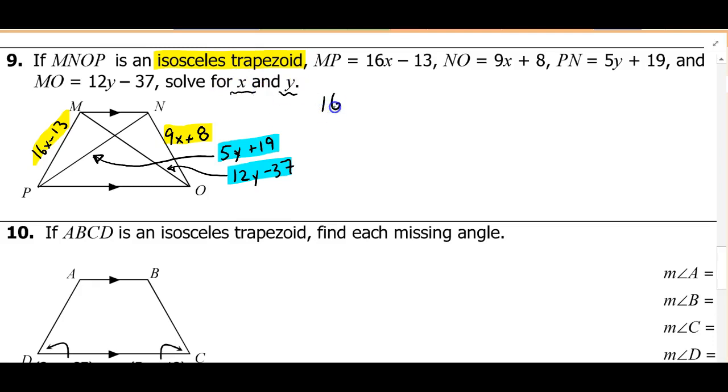So let's set the legs equal to each other. 16x minus 13 is equal to 9x plus 8. And I'm going to add 13 to both sides. So I get 16x is equal to 9x plus 21. Then I'll subtract 9x from both sides. So I get 7x is equal to 21. Divide by 7. And I get that x is equal to 3.